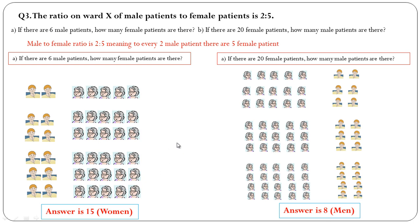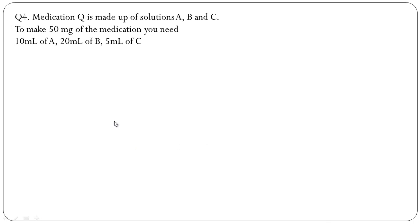Question number 4: Medication Q is made up of solutions A, B, and C. To make 50 mg of the medication you need 10 ml of A, 20 ml of B, and 5 ml of C.